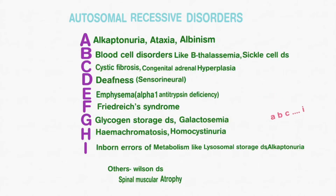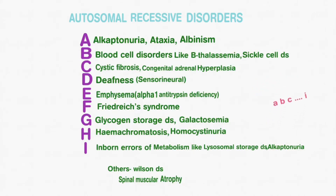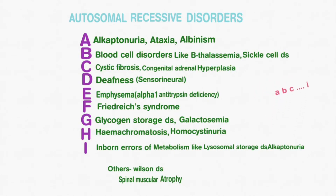F stands for Friedreich's Ataxia. G stands for Glycogen Storage Disease and Galactosemia. H stands for Hemochromatosis and Homocystinuria. I stands for Inborn Errors of Metabolism like Lysosomal Storage Disorders.